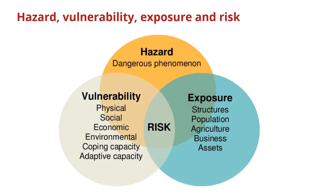When we're talking about disaster, we need to talk about the risk of disaster. We define disaster risk as the potential loss of life, injury, or damage to assets which could occur to a system, society, or community in a specific period of time, determined probabilistically as a function of hazard, exposure, vulnerability, and capacity. As you can see from this diagram, the intersection of hazard, exposure, and vulnerability yields your disaster risk.